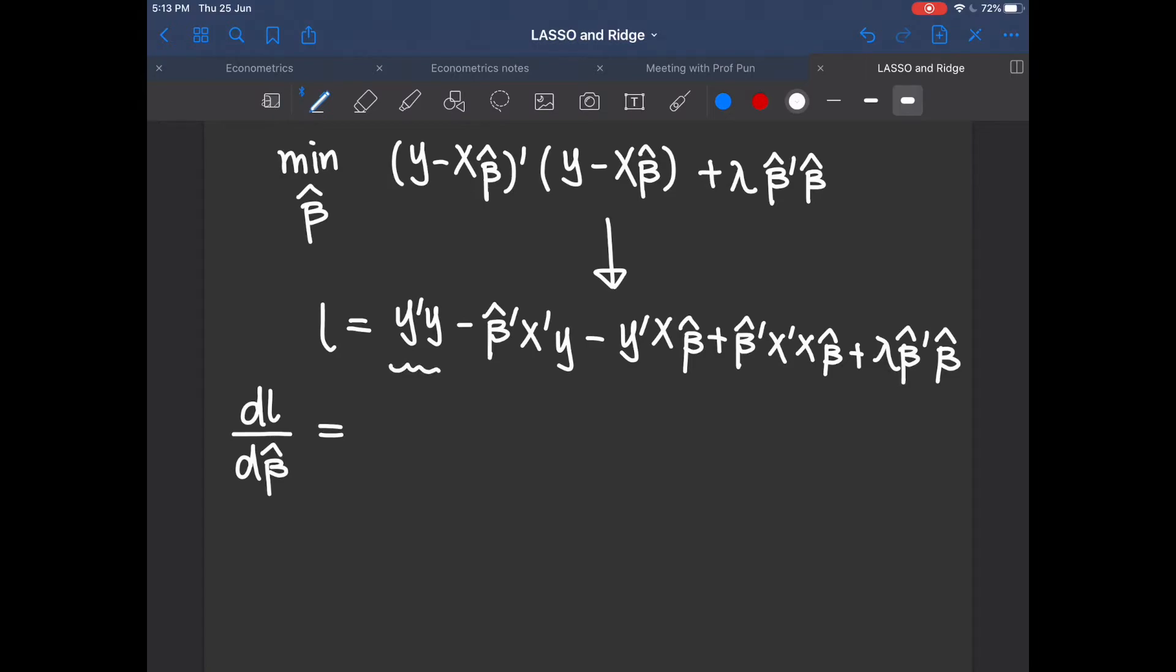And as you can see, the first term has nothing to do with beta hat. It simply gives you zero. And the second term, beta hat transpose is in the front of this term. So you keep the remaining of the term, which is x transpose y. Minus here beta hat is at the back and it doesn't have a transpose with itself. So you transpose the preceding terms. So you get x transpose y as well.